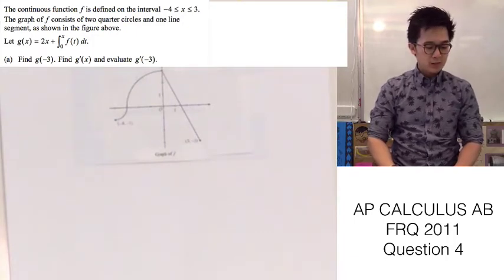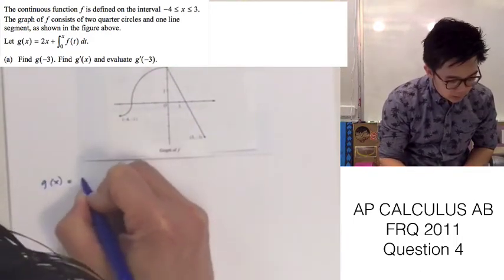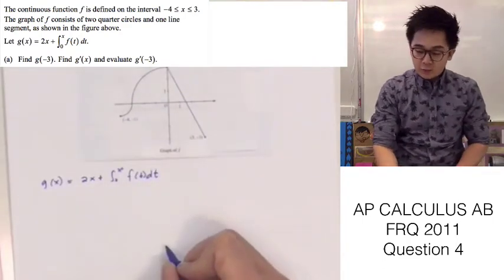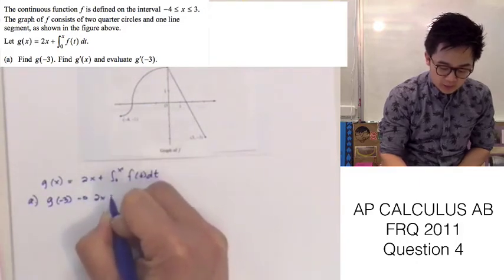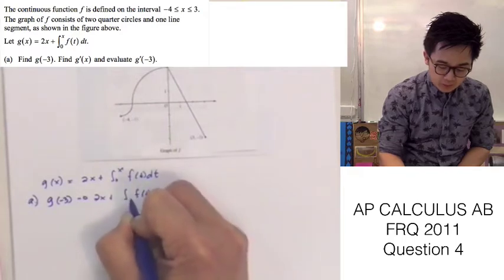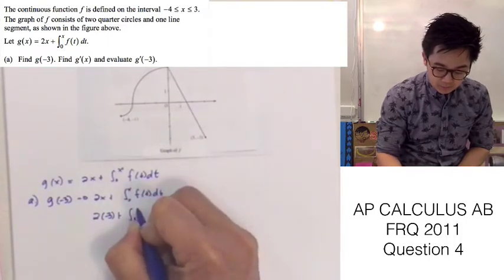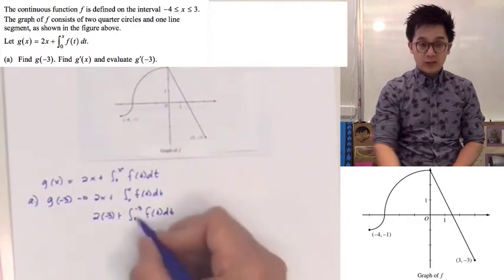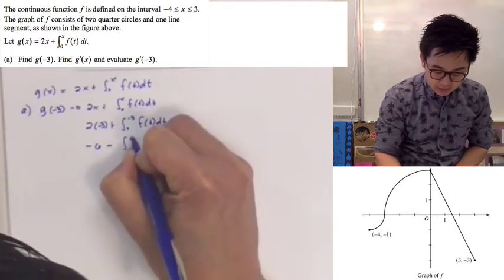To answer problem letter A, we're supposed to find g of negative 3, g prime of x, and also evaluate g prime of negative 3. So for g of negative 3, we use g of x equals 2x plus the integral of f of t dt from 0 through x, replacing x by negative 3, which gives us 2 times negative 3. Since our upper limit is less than our lower limit, we need to correct the limits of integration, giving us negative 6 minus the integral from negative 3 to 0 of f of t dt.